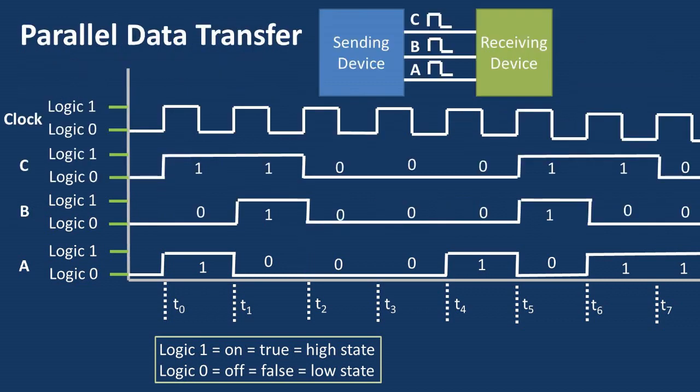Now in parallel data transfer, there is a sending device that is connected to the receiving device with multiple lines where the data can be transferred. In this case, there are three lines connecting the sending device to the receiving device. When the clock cycle rising edge happens, each line puts out a one-bit zero or one signal to the receiving device.